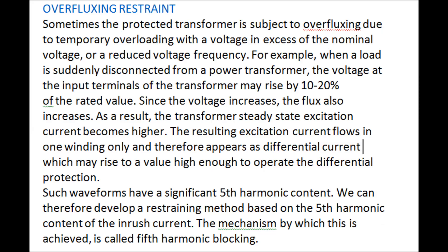Over-fluxing restraint: the protected transformer may be subject to over-fluxing due to temporary overloading with voltage in excess of the nominal, or a reduced frequency. For example, when a load is suddenly disconnected, the voltage at the input terminal may rise by 10–20% of the rated value. Since voltage increases, flux also increases, causing the transformer's steady-state excitation current to become higher. This excitation current flows in one winding only and therefore appears as a differential current, which may be high enough to operate the relay. Such waveforms have a significant fifth harmonic content, and a restraining method based on the fifth harmonic content is used — called fifth harmonic blocking.